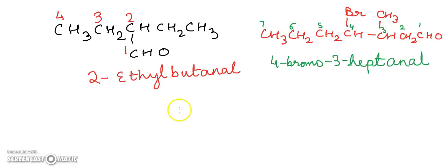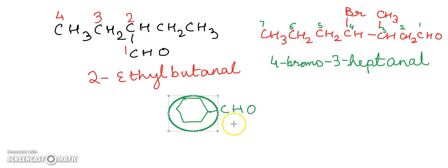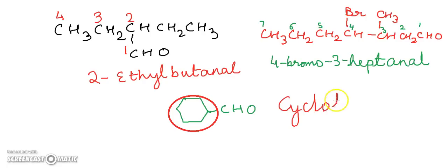Now we look at aldehydes where the CHO group is attached to a carbocyclic ring. For example, if a CHO group is attached to a cyclohexane ring, the compound is named cyclohexane carbaldehyde.